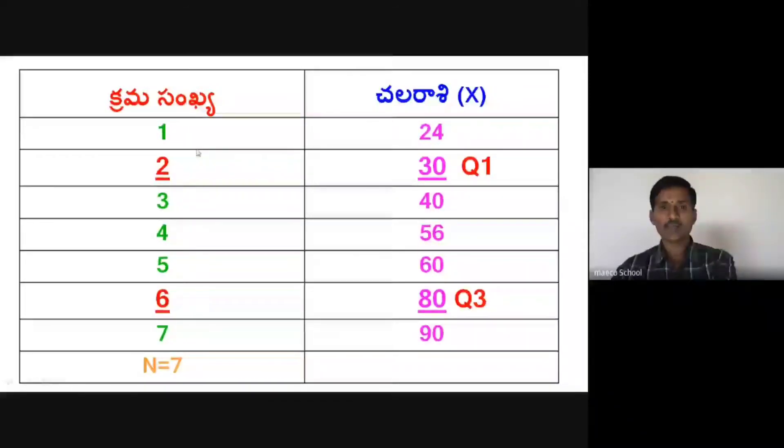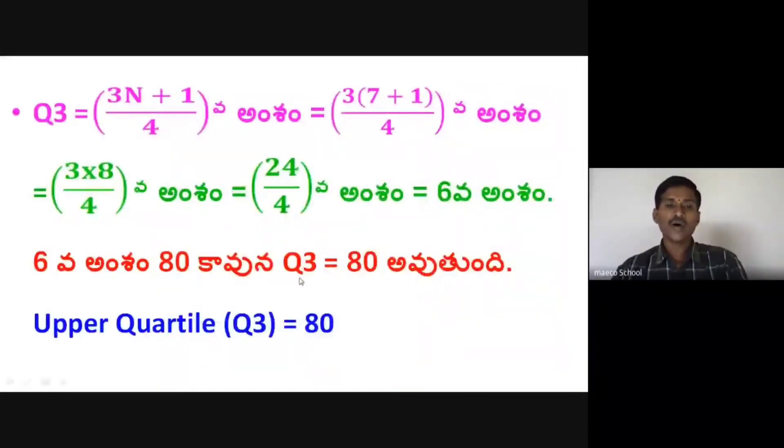Serial number 6, the value of the variable is 80. So Q3 is equal to 80.